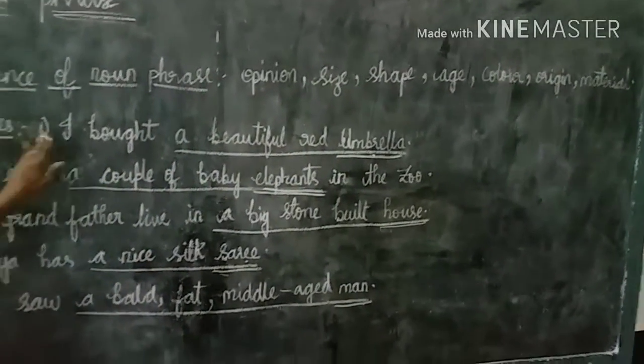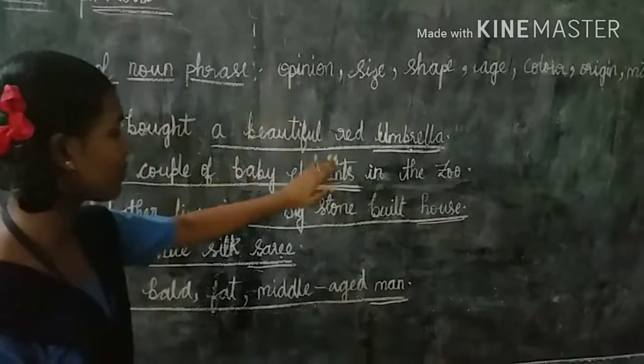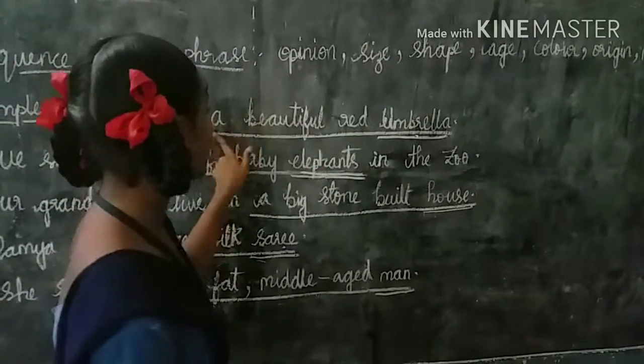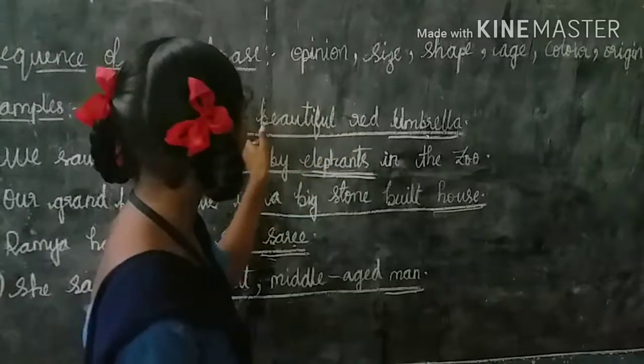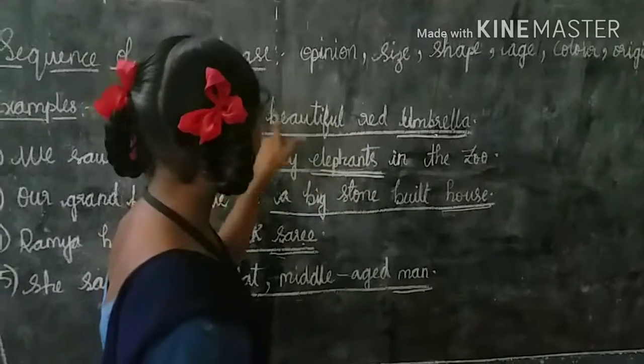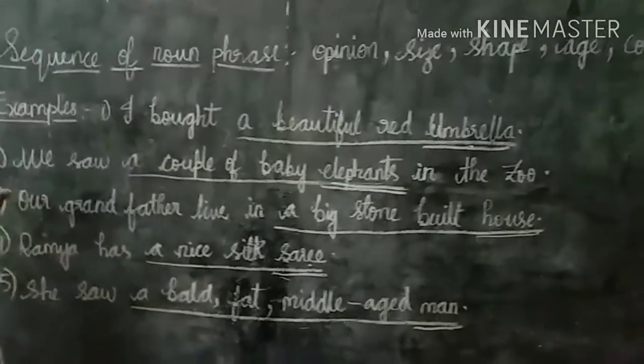Example. I bought a beautiful red umbrella. Umbrella is a noun. A beautiful red is a phrase. So, a beautiful red umbrella is a noun phrase.